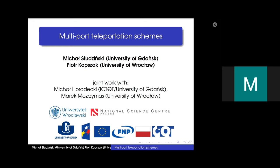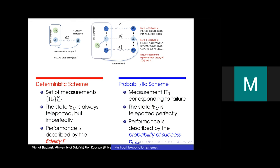Quantum teleportation is one of the most widely used primitives in quantum information science, which performs an arbitrary quantum state transfer between two separate systems. It involves pre-shared entanglement and consists of three stages: joint measurement on the teleporter subsystem together with the shared state, communication of the measurement outcome via a classical channel to the receiver, and correction depending on the classical output obtained by Alice during the measurement.